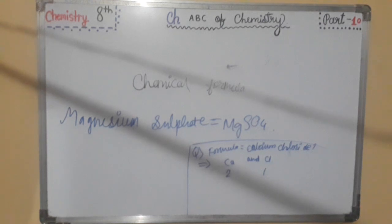Step five is, criss cross the numerals of charges to obtain the formula. When we criss cross the numeral values of the charges, we obtain the calcium chloride as, first we criss cross this, Ca1, Cl2.